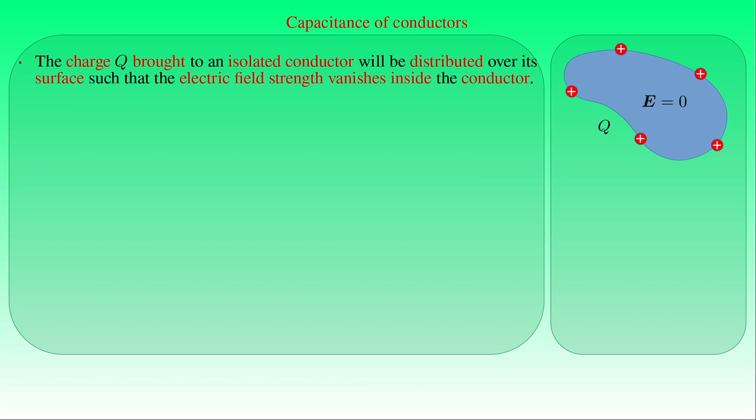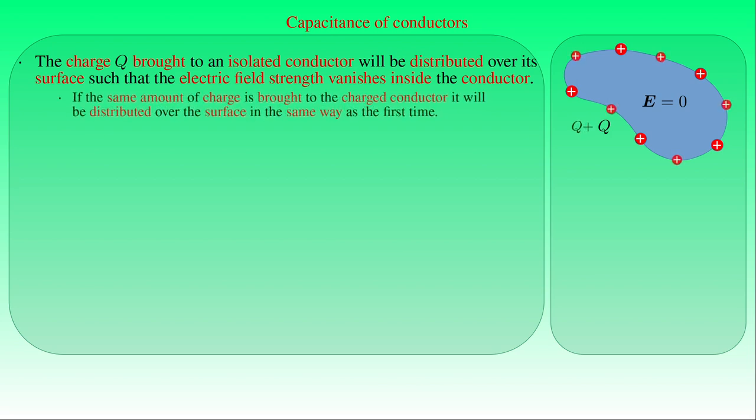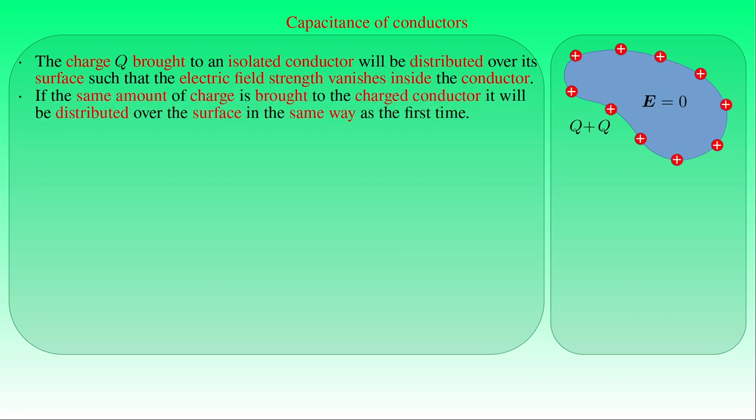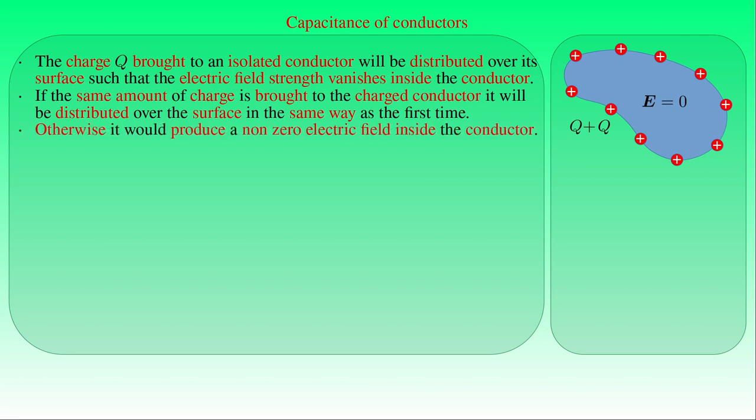Hence, if we bring the same amount of electric charge Q to the charged conductor, it will be distributed over the surface of the conductor in the same way as it was distributed the first time. Otherwise, it would produce a non-zero electric field inside the conductor.